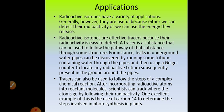If a radioisotope is injected, we call it a tracer because it helps you in tracing or following the pathway of that particular substance through some structure. For example, if there is a leakage in an underground water pipeline, the leakage can be discovered by running tritium-containing water through the pipes and then using a Geiger counter to locate any radioactive tritium subsequently present in the ground around the pipes.